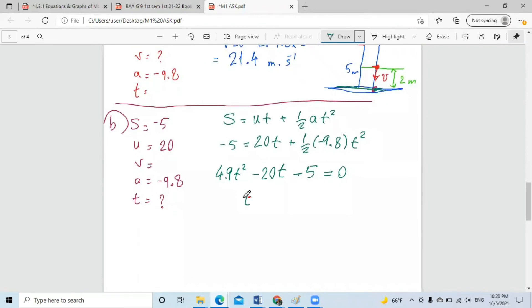By using the quadratic equation to find the time, which is negative B, so it will be 20 plus minus square root of negative 20 squared. So 20 squared, because the square cancels the negative. Minus 4 multiplied by 4.9, multiplied by A, multiplied by C, which is negative 5.